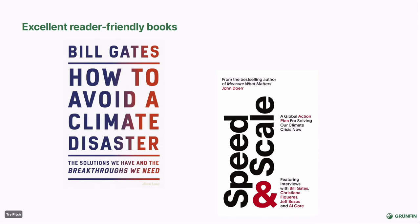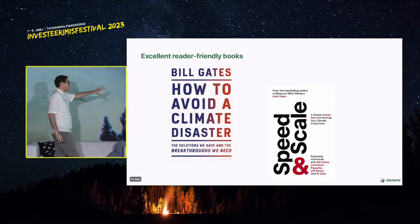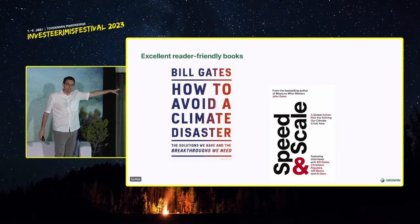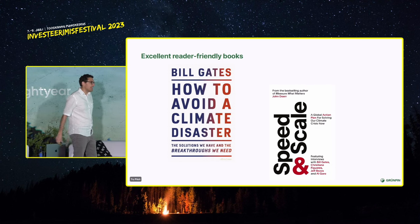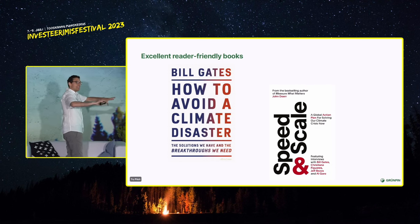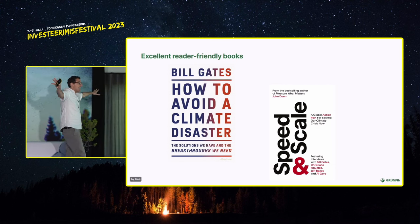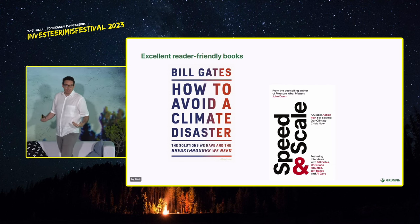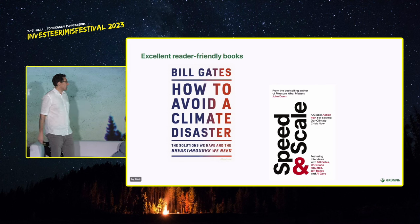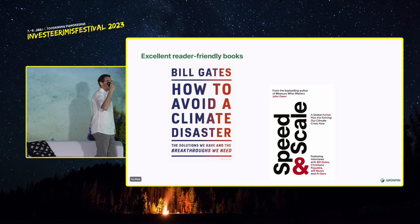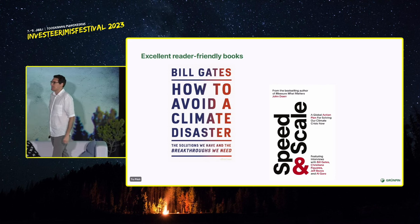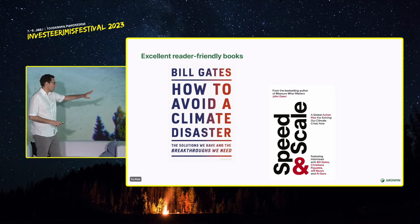If this is a subject you're passionate about and you want to start with the basics, there's a phenomenal book called 'How to Avoid a Climate Disaster.' I get no royalties from telling you this — I just found it amazing in how it explains the basics. And if you really want to get into the details, 'Speed and Scale' by John Doerr is a phenomenal book that creates an action plan on how to get us to net zero by 2050 in detail.